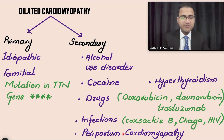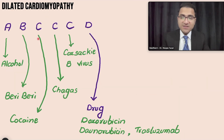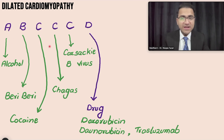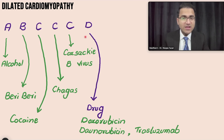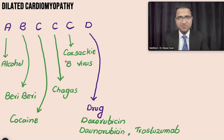A simple mnemonic to remember the causes of dilated cardiomyopathy is ABCCD: A for Alcohol, B for Beriberi (thiamine deficiency due to alcohol intake), C for Cocaine, C for Chagas disease, C for Coxsackie B virus, and D for Drugs such as doxorubicin, daunorubicin, and trastuzumab. These are the important causes commonly tested in exams.